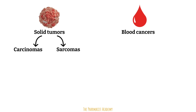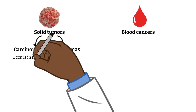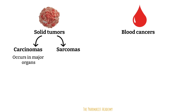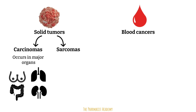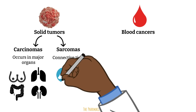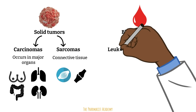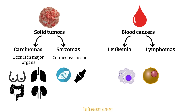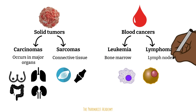Solid tumors can also be divided into two subcategories: carcinomas and sarcomas. The term carcinoma refers to cancers that begin in tissues or major organs — examples include breast, lung, colon, and kidney cancer. Sarcomas occur in connective tissues such as muscles and bones. Blood cancers are divided into leukemias and lymphomas. Both affect your immune cells, so there will be an increase in the number of immune cells. The difference is that leukemia begins in the bone marrow, while lymphomas normally begin in the lymph nodes.